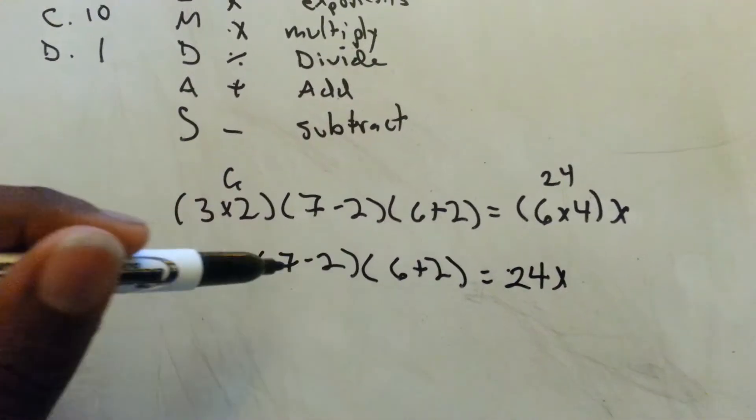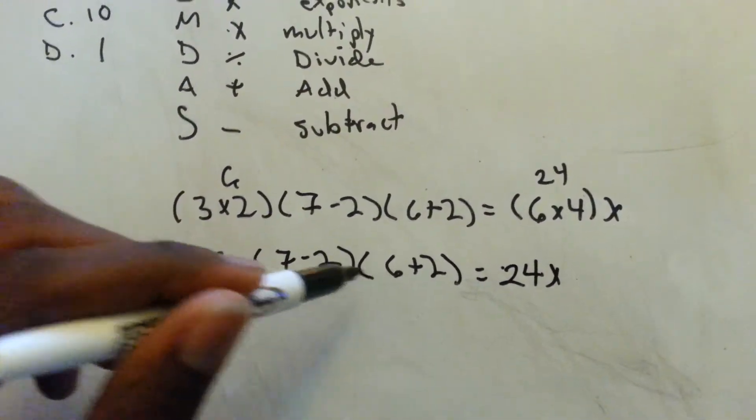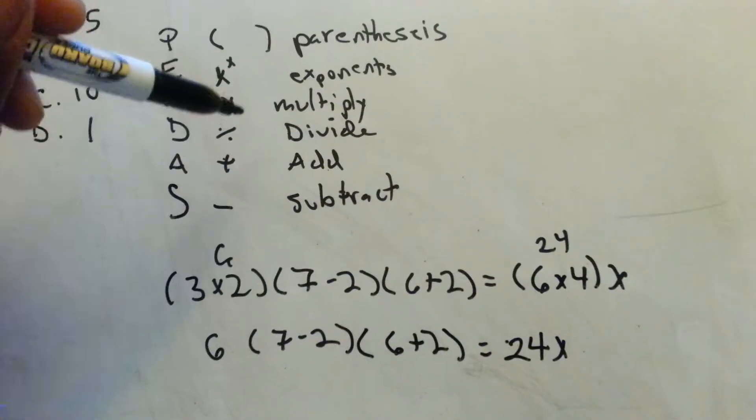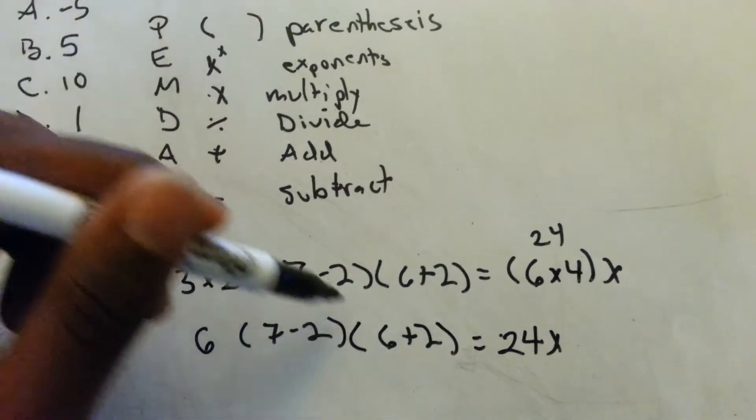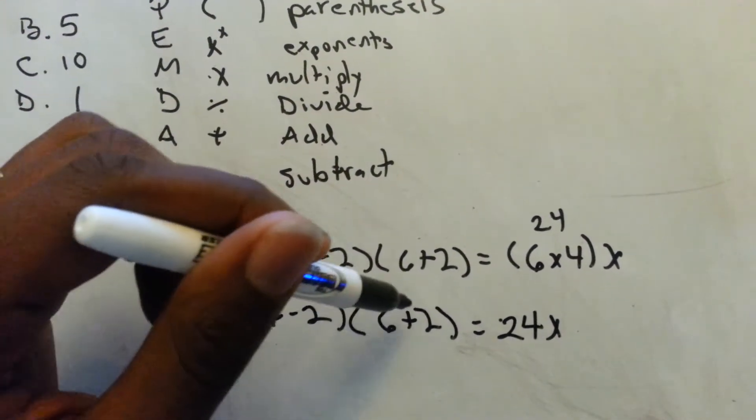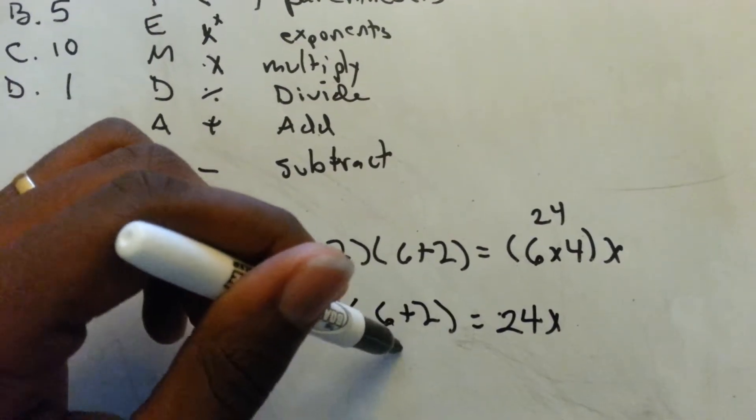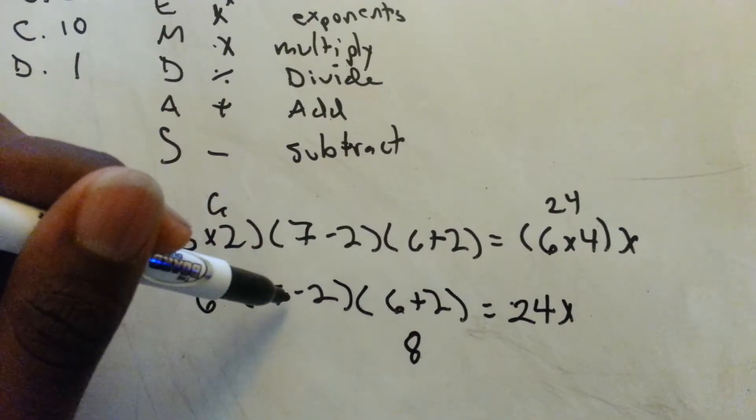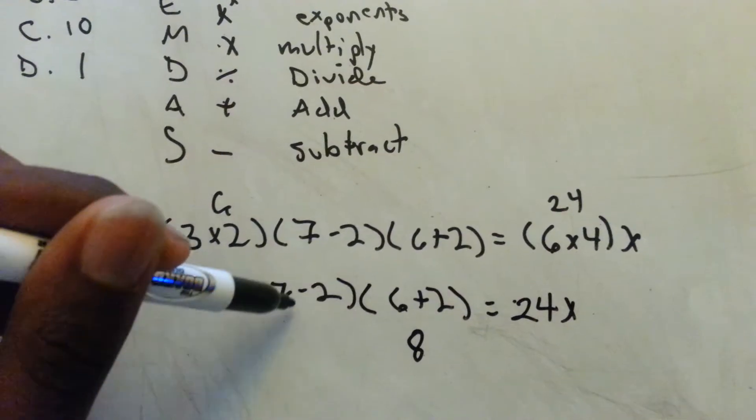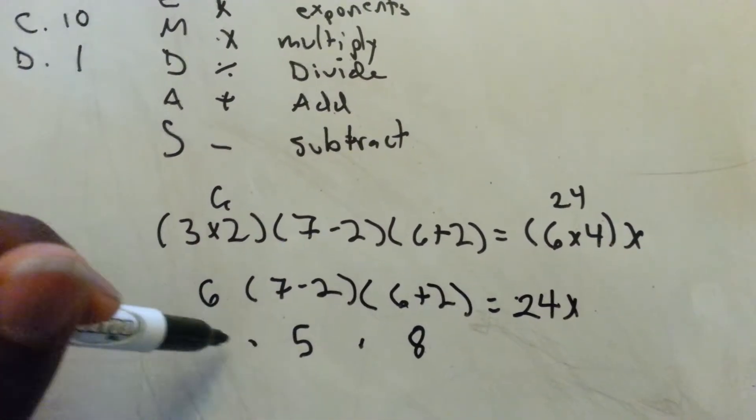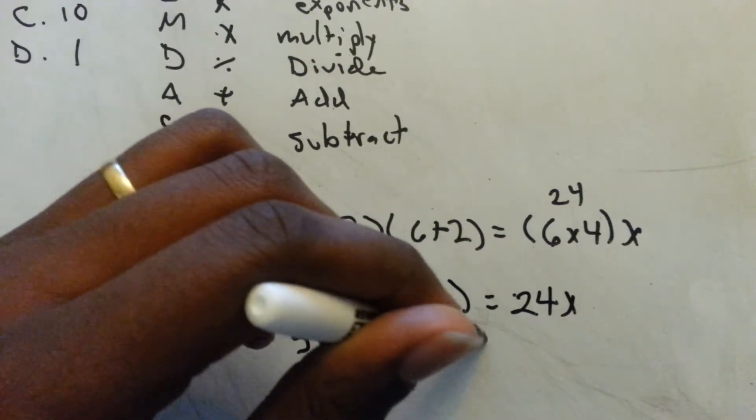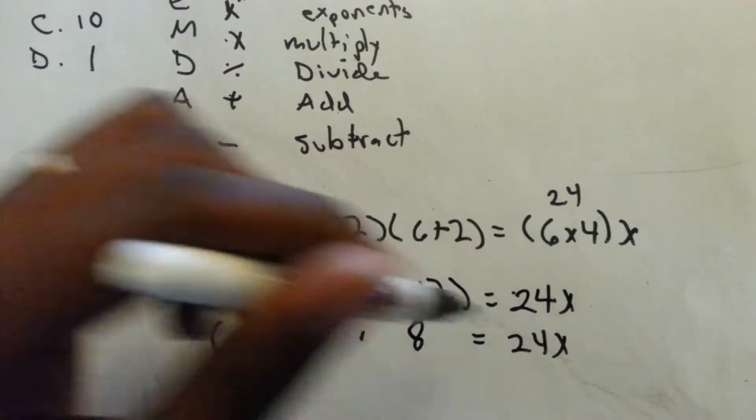So we have 6 times (7-2) times (6+2) equals 24x now. And now we've got to do what's inside the parentheses, what's left inside the parentheses. Next thing down the list, there's no division, so we have add. Adding what's inside the parentheses, we have six plus two is eight, and then we have subtraction, seven minus two is five. So all these things are getting multiplied equals 24x.